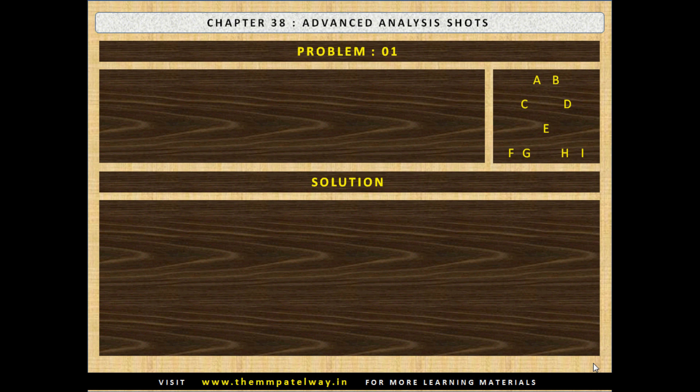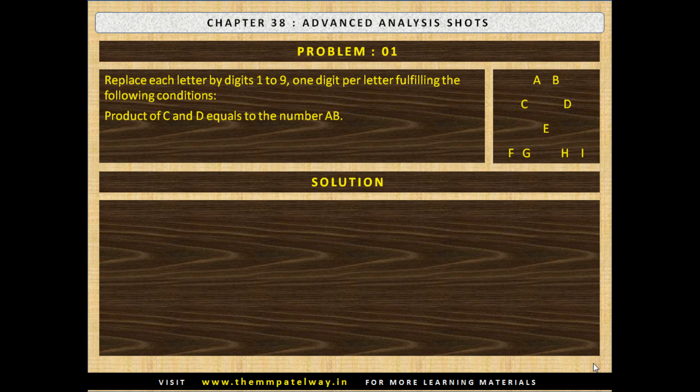Problem 1. Replace each letter by digits 1 to 9, one digit per letter, fulfilling the following conditions: Product of C and D equals to the number AB, Product of C and E equals to the number FG, and Product of D and E equals to the number HI.